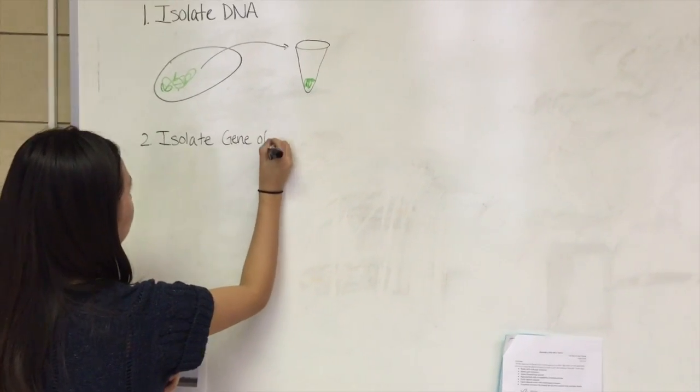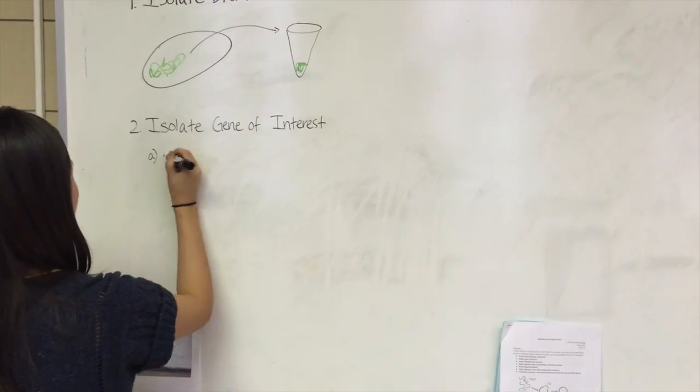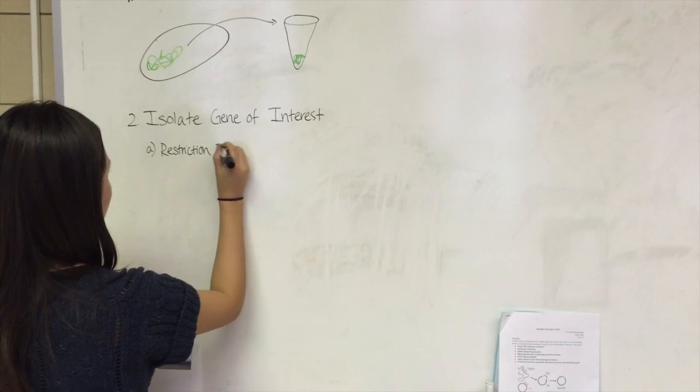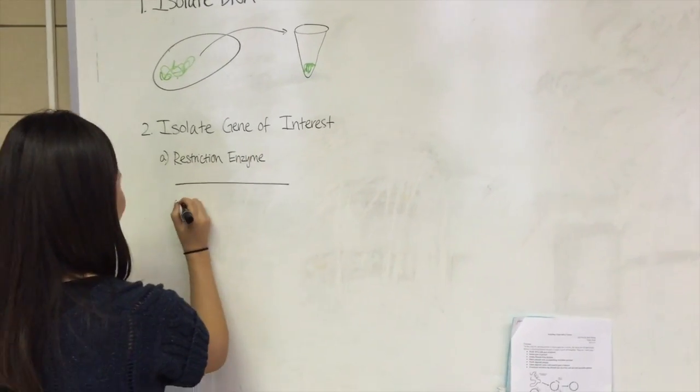Second is to isolate the gene of interest using one of two options. First, use restriction enzymes directly to cut the gene out of the DNA.